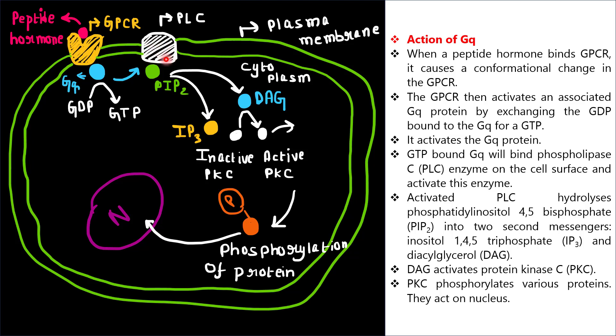GTP-bound GQ will bind phospholipase C, or PLC, enzyme on the cell surface and activate it. Activated PLC hydrolyzes PIP2, that is phosphatidylinositol-4,5-bisphosphate, into two second messengers: IP3 (inositol-1,4,5-trisphosphate) and DAG (diacylglycerol).